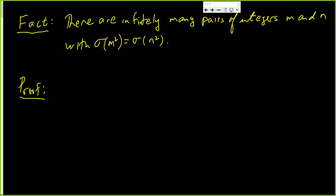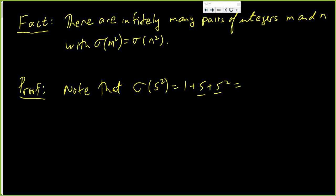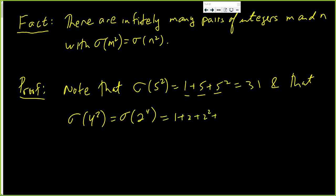The way you should think of this problem is you want to find two perfect squares that give the same sigma. Note that sigma of 5 squared is 1 plus 5 plus 5 squared: 25 plus 5 is 30, one more is 31. And sigma of 4 squared, which is the same as sigma of 2 to the fourth, is 1 plus 2 plus 2 squared plus 2 cubed plus 2 to the fourth. We get 1 plus 2 plus 4 plus 8 plus 16: 16 and 4 are 20, 8 and 2 are 10, that's 30 so far, plus one more. We got the same answer: 31.